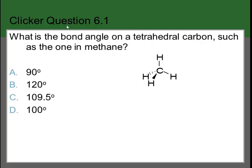Clicker question 6.1: What is the bond angle on a tetrahedral carbon such as the one shown in methane? We need to remember the bond angle for tetrahedral atoms — it doesn't matter that it's carbon in methane, just that it's tetrahedral molecular geometry. That bond angle is 109.5 degrees.